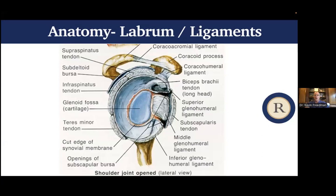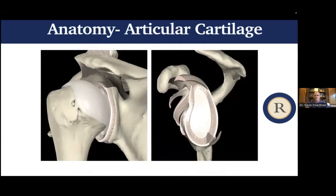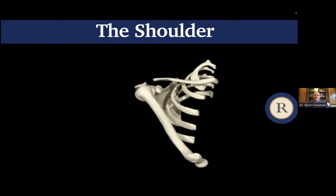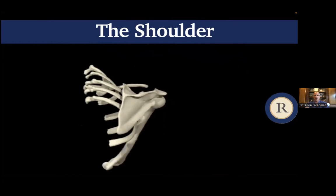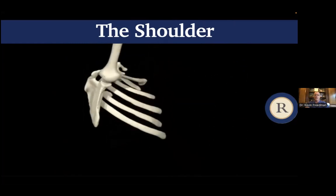This cartilage ring surrounds the socket. There's also the articular cartilage, which is the lining of the shoulder joint, including both the humeral head and the socket — that's what's affected in arthritis. The shoulder involves a very complex set of motions to reach overhead, including the scapula, the clavicle, and the glenohumeral joint. All these muscles power that motion, and there's a lot that can go wrong.